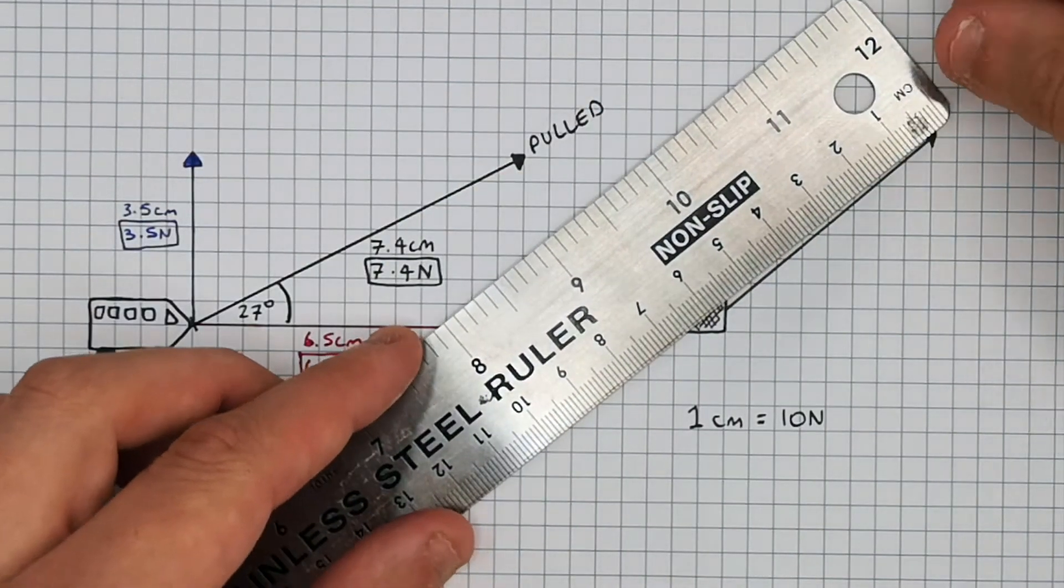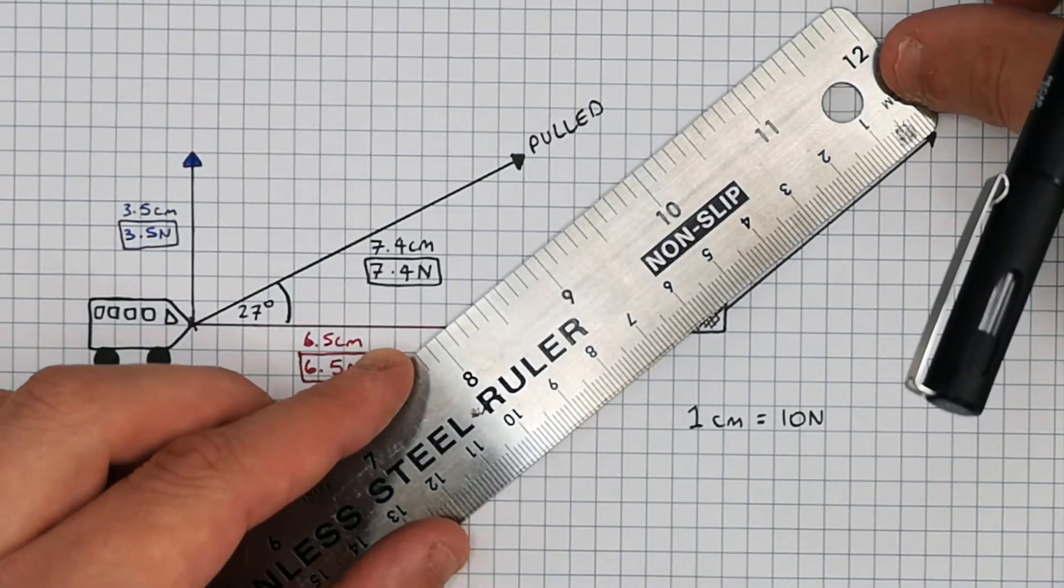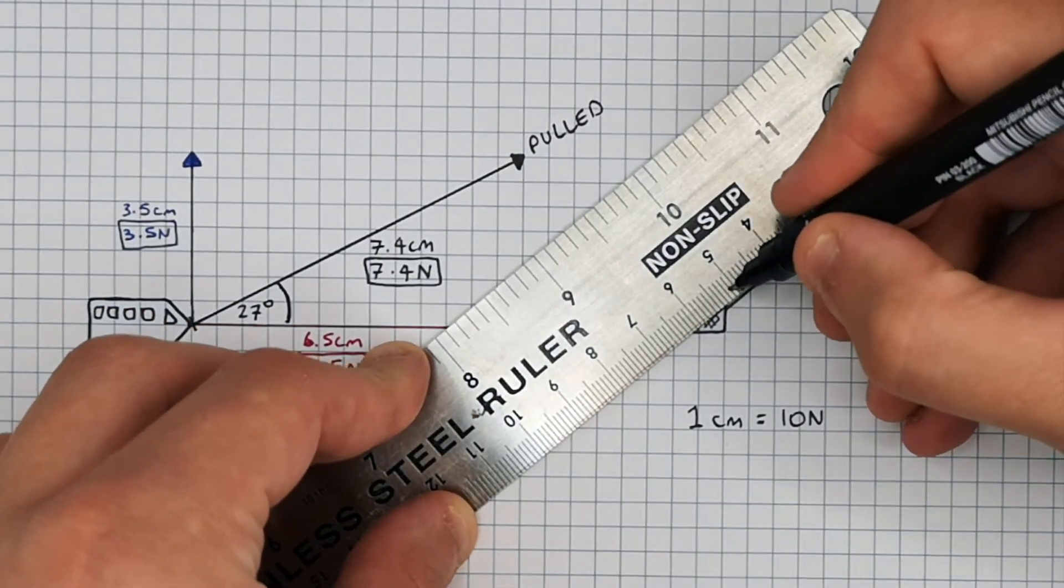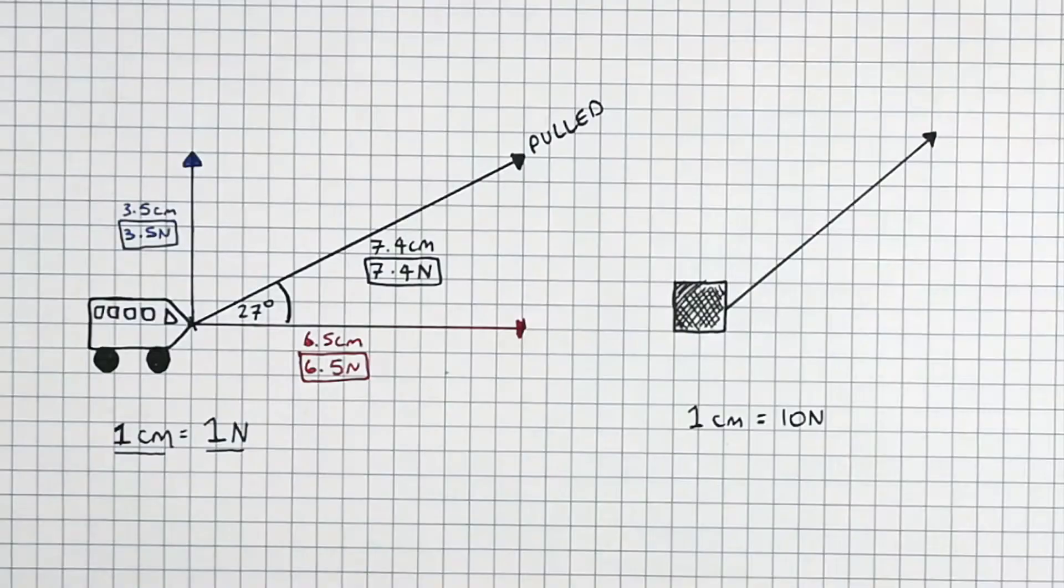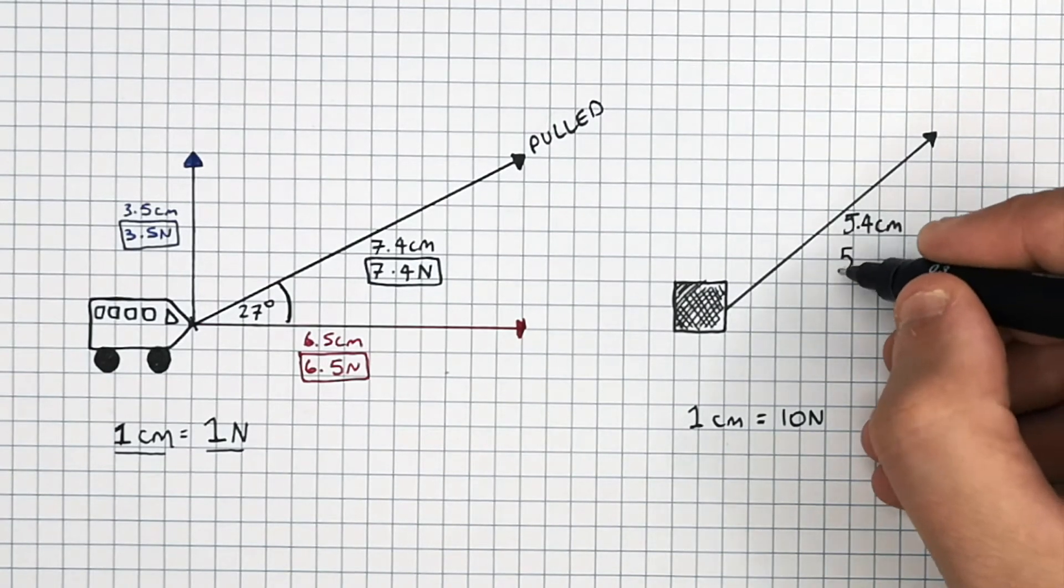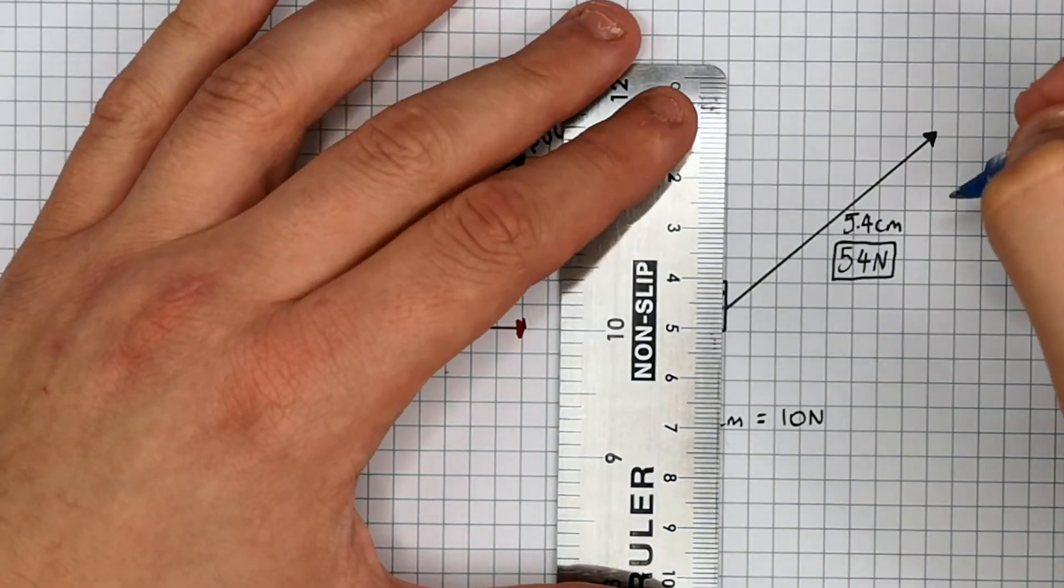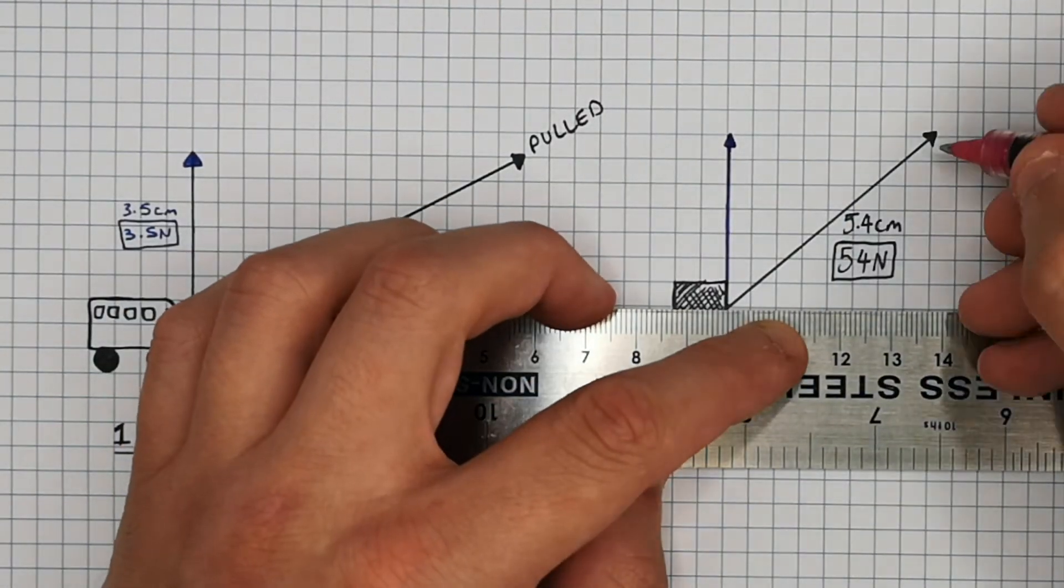So this block is being pulled along, and the magnitude of this force can be calculated by measuring the line and then converting it into newtons using your scale. So this is 5.4 centimeters, which gives you a force of 54 newtons. You can then split this single force into the vertical and horizontal components.